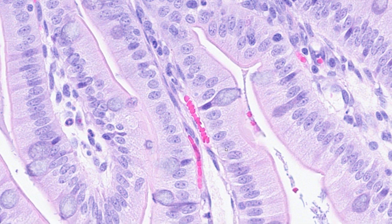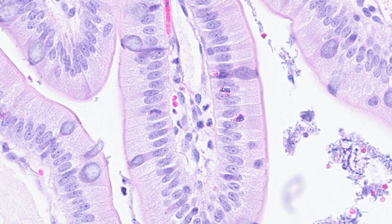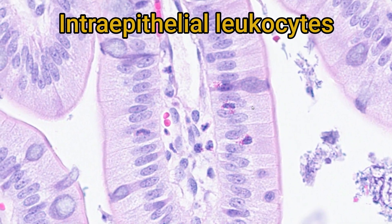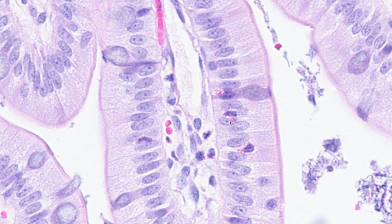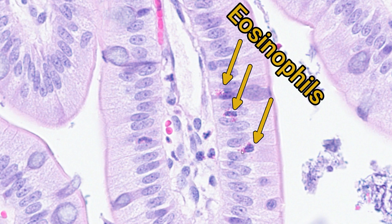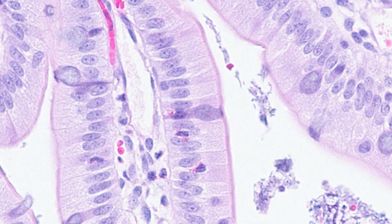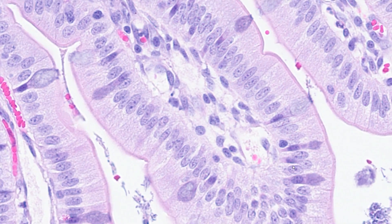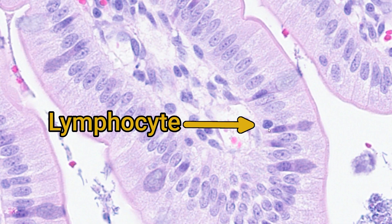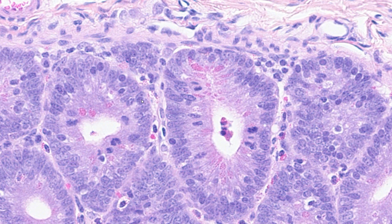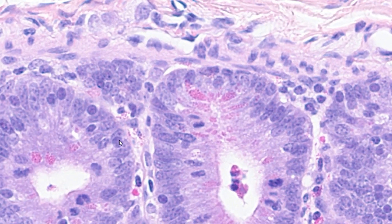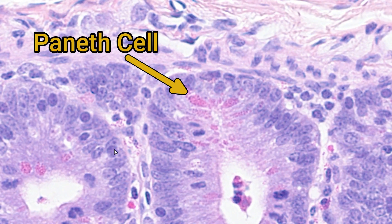Usually you'll be able to see a few other cell nuclei randomly dotted around in the epithelium. Most of these are intraepithelial leukocytes which are part of the resident immune system. For example, in this section we've got a few eosinophils within the epithelium, identifiable by their granular eosinophilic cytoplasm, and a lymphocyte nucleus also transiting through the epithelium. Going back down to the crypt, sometimes you can see another cell type: the Paneth cell. These are quite distinctive as their cytoplasm is filled with eosinophilic granules, and they secrete antimicrobial peptides forming part of the innate immune system.